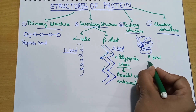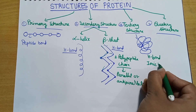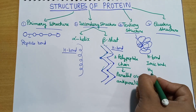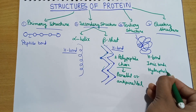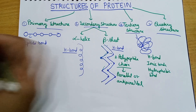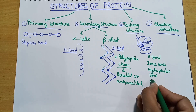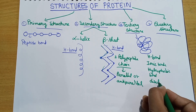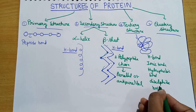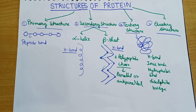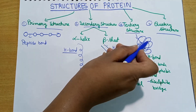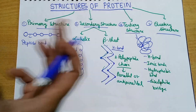The tertiary structure is more complex. Many bonds are involved: hydrogen bonds, ionic bonds, and disulfide bonds — also called disulfide bridges. All of these make the tertiary structure compact and complex.